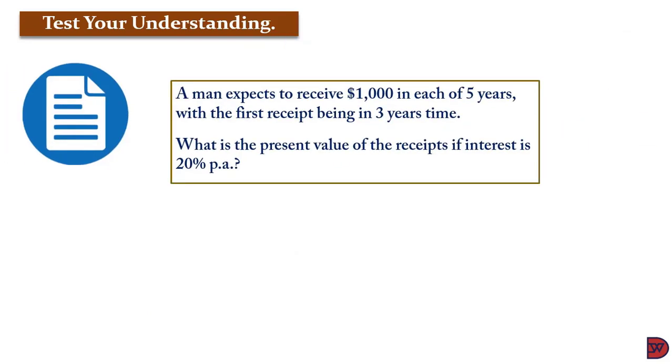With this understanding, a man expects to receive $1,000 in each of 5 years with the first receipt being in 3 years time. You are supposed to look at the present value of the receipt if the interest is 20% per annum.